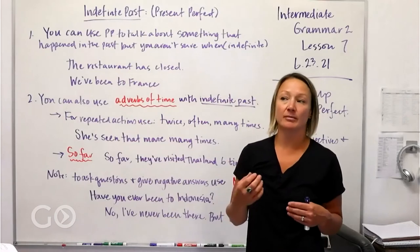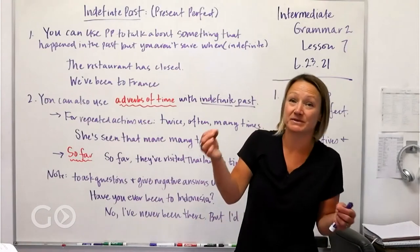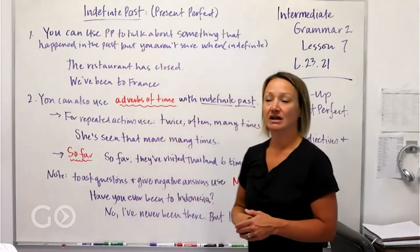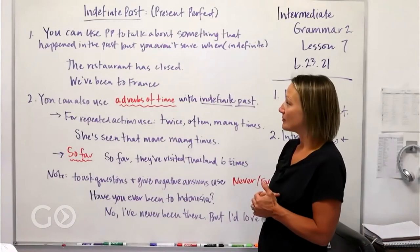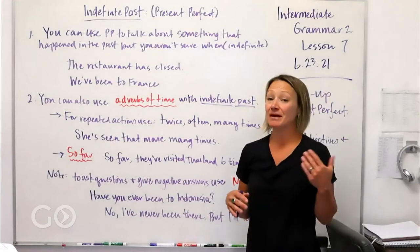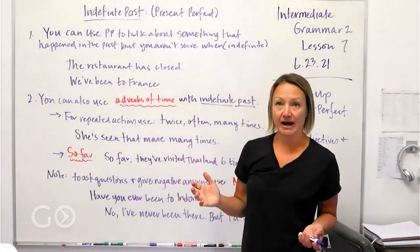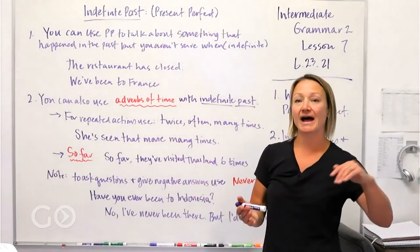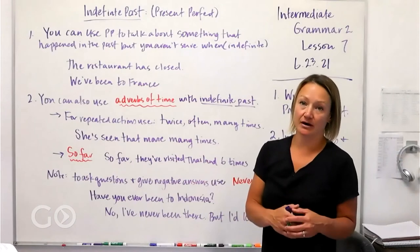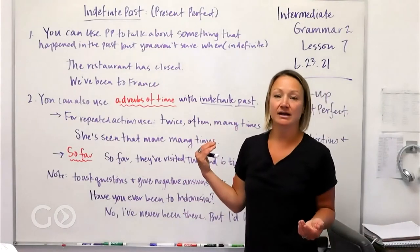It's something that happened in the past, but we're not talking about a specific experience or a specific event attached to a specific time. So let's read through some of these rules and get a little clearer. Number one: you can use the present perfect to talk about something that happened in the past and maybe you aren't sure when. 'We've been to France' is just saying it's something that you have done — not talking about one specific time you were there.